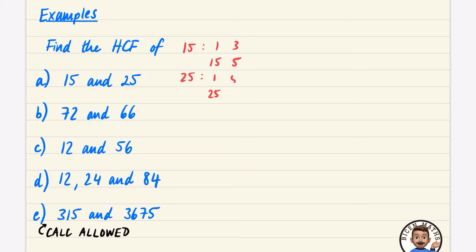For 25 we have 1 × 25 and 5 × 5. I'm not going to write the five twice. The ones I have in common are 1 and 5, so the highest common factor is 5. The highest common factor of 15 and 25 is 5.